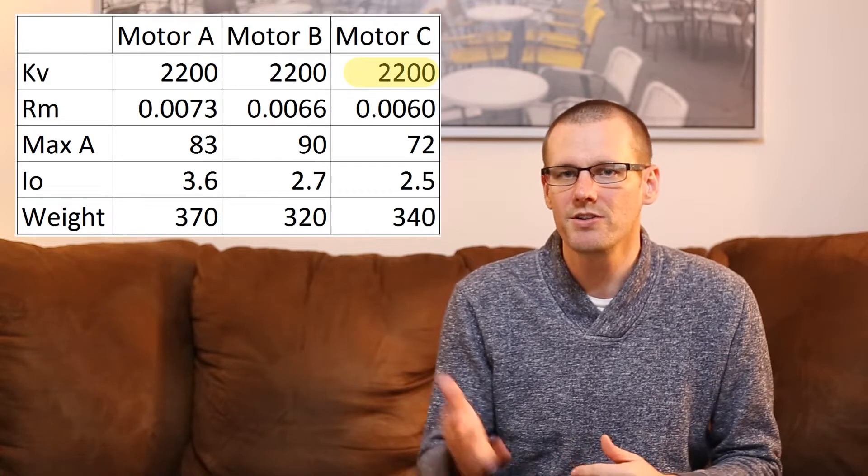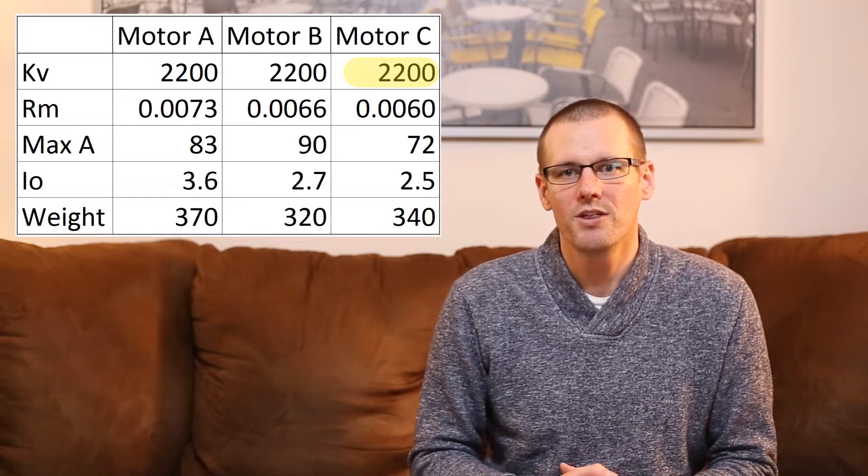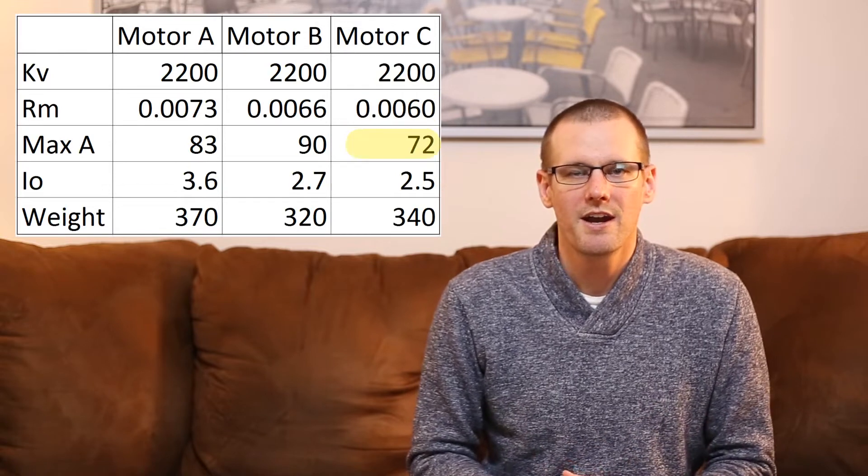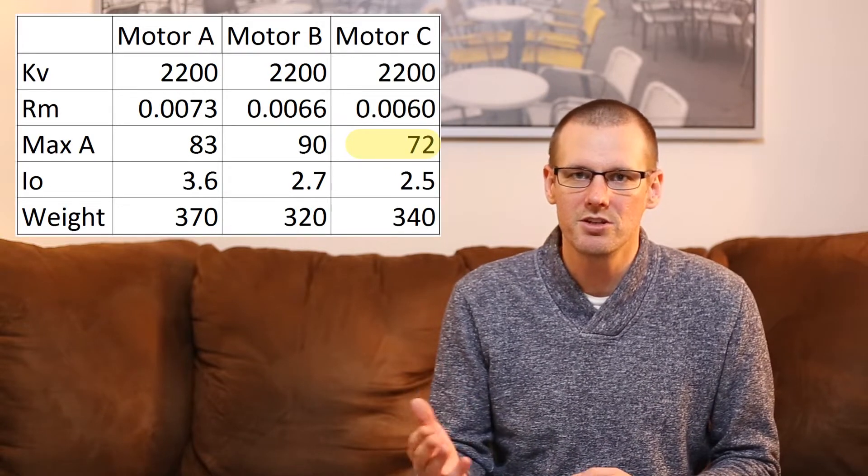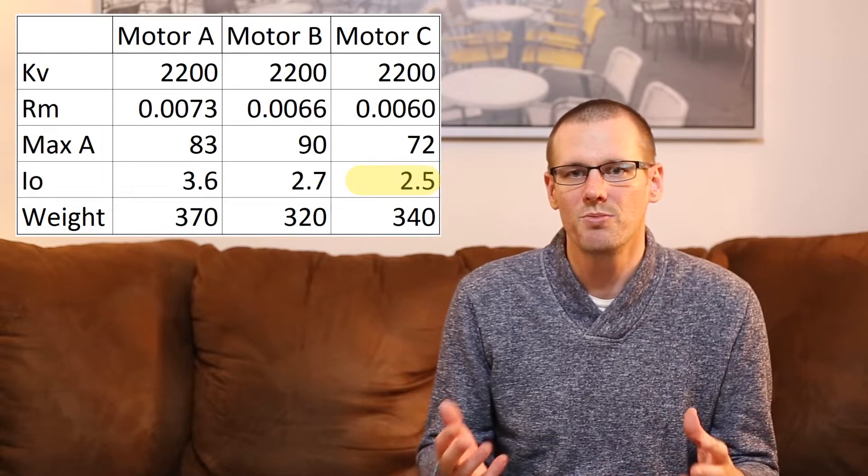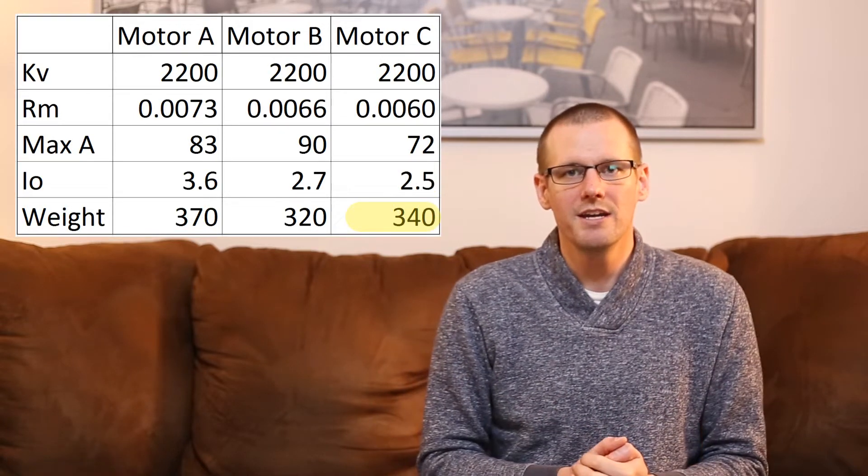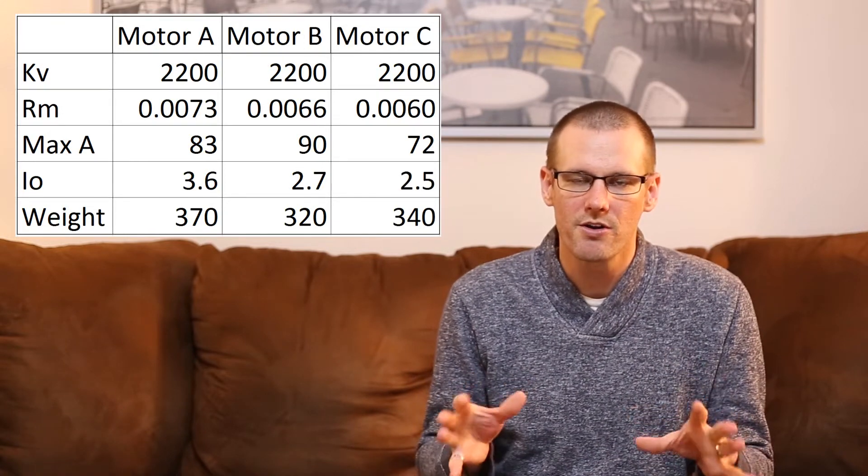For motor C, this one also 2200 kV with a Rm value of 0.0060. Then our maximum current is 72 amps. Then we have an idle current of 2.5 amps with a motor weight of 340 grams. That is the specifications for all three motors.